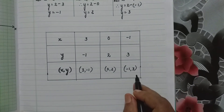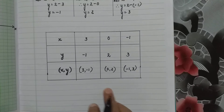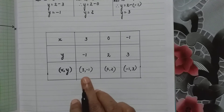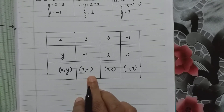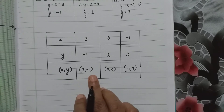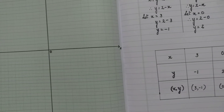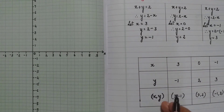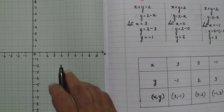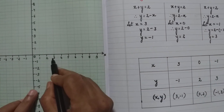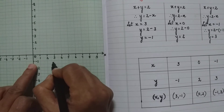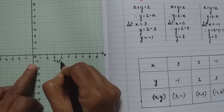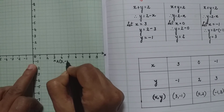Using these 3 coordinates, we will draw the line. The first coordinate is (3, −1). The x coordinate is positive and y coordinate is negative, meaning it lies in the fourth quadrant. So 3 on the x axis and minus 1 on the y axis gives us this point, which we name A(3, −1).